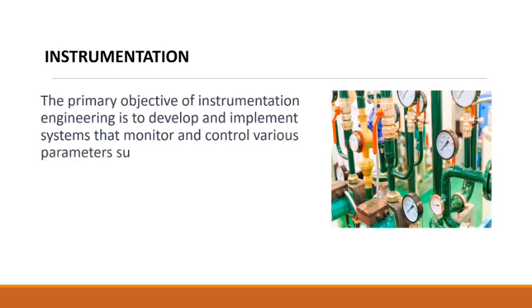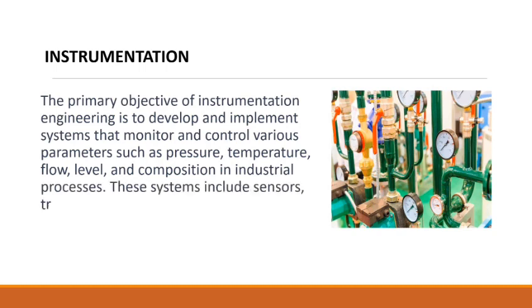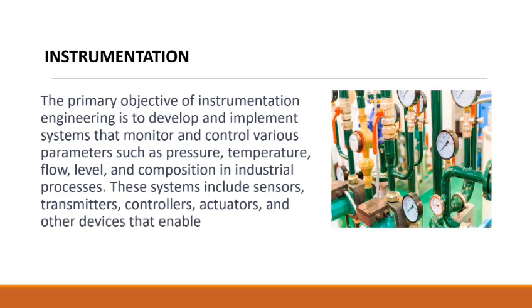These parameters include pressure, temperature, flow, level, and composition in industrial processes. The systems used to monitor and control these parameters include sensors, transmitters, controllers, actuators, and other devices that enable the measurement and control of these parameters.